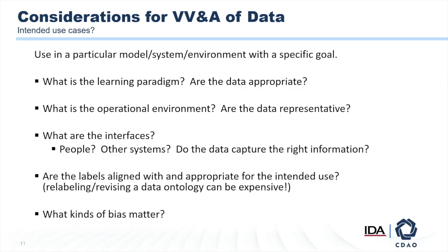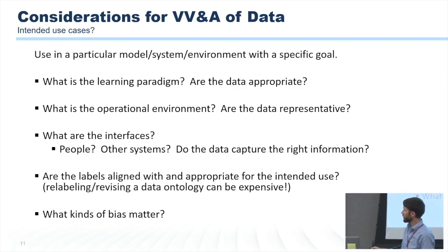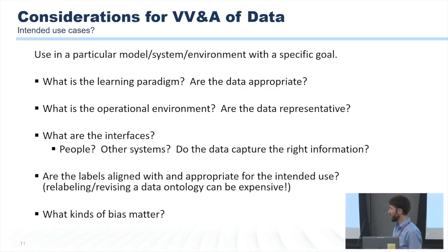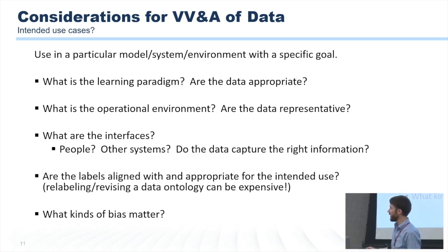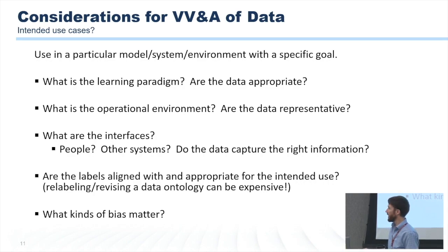Intended use cases: one thing I'll mention here — are the labels aligned with and appropriate for the intended use? We've encountered some cases where the developers have gotten to a fielded model and learned that the data ontology actually is not the ontology that they need to be using from a use case perspective. And so they have to go back and revise the data ontology, change the labels, and then retrain and retest your model. That can be a really expensive thing to do if you have to do it after the fact. So these are things where it really helps to spend a good bit of time thinking about this up front.